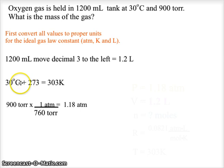Our Celsius temperature gets added to 273 to give us 303 Kelvin. Our 900 torr, we multiply by 1 atmosphere and divide by 760 to cancel the torr and get 1.18 atmospheres.